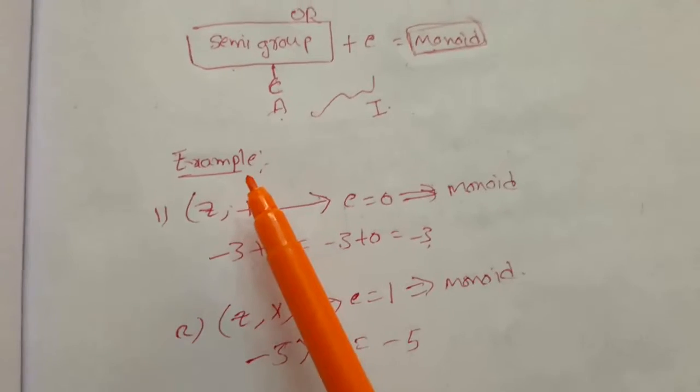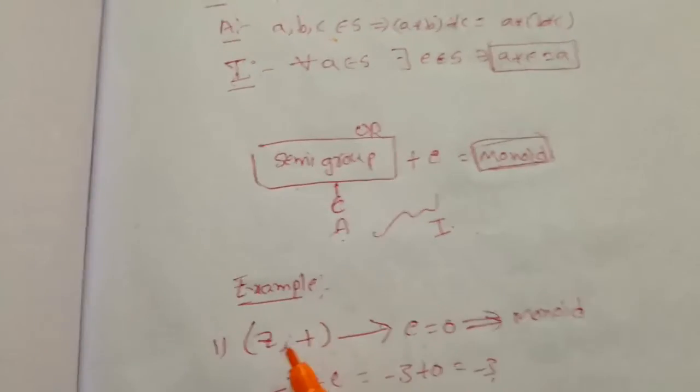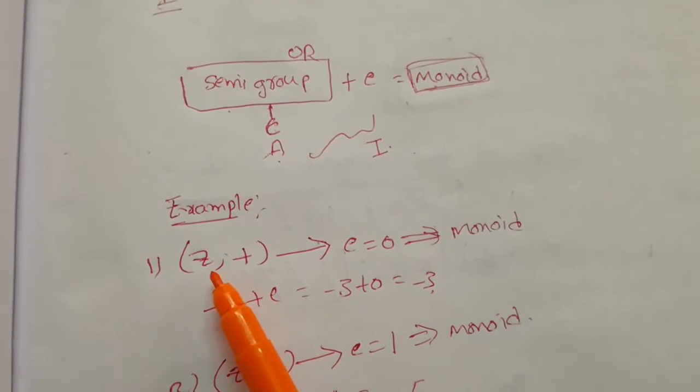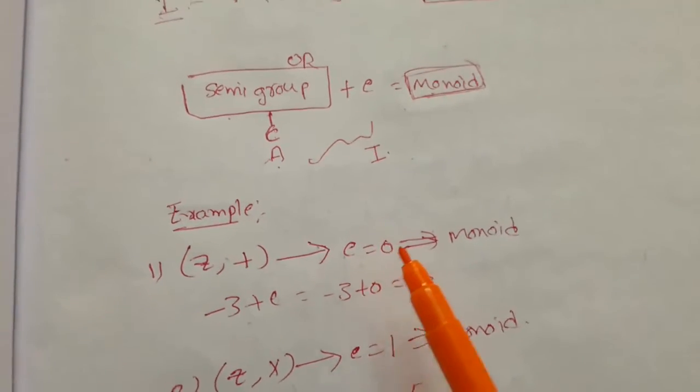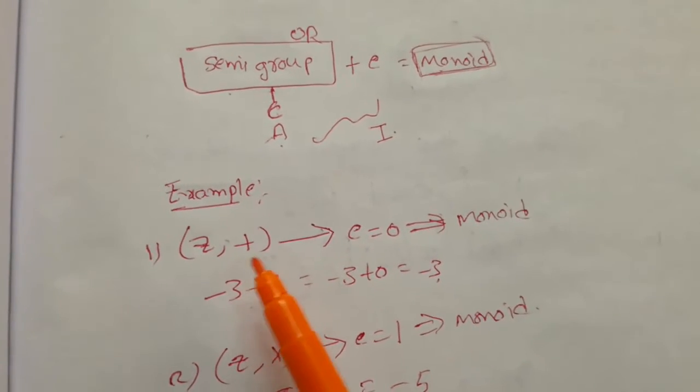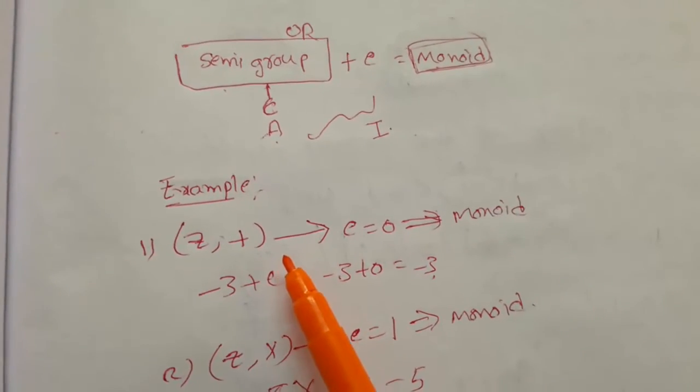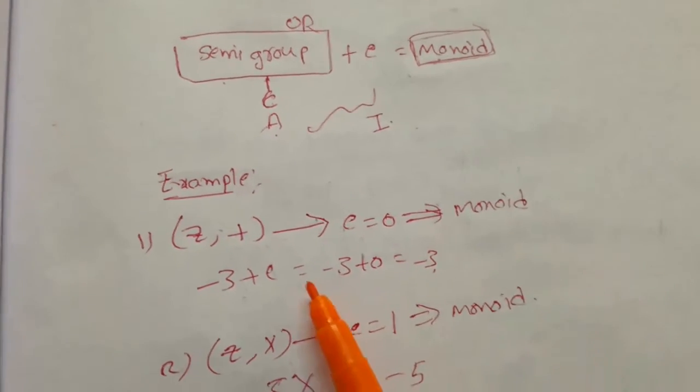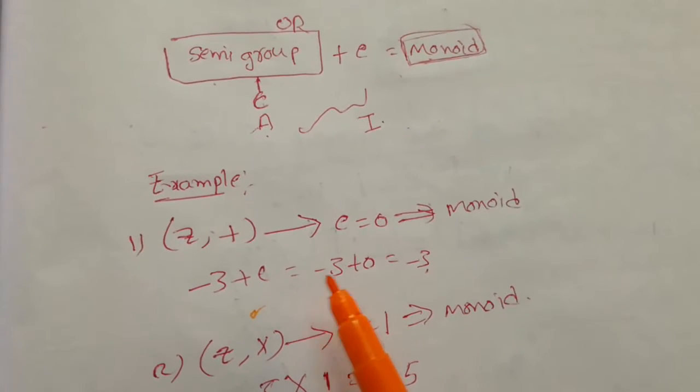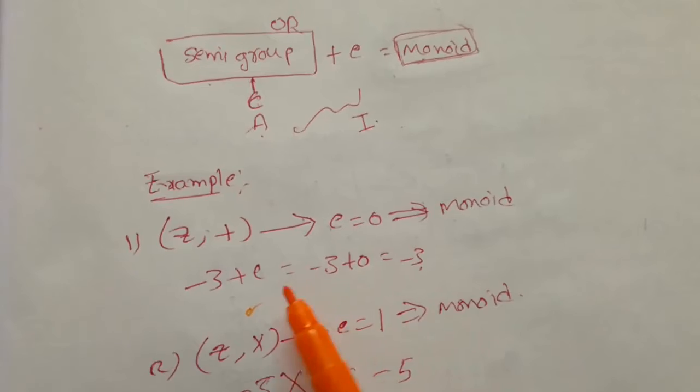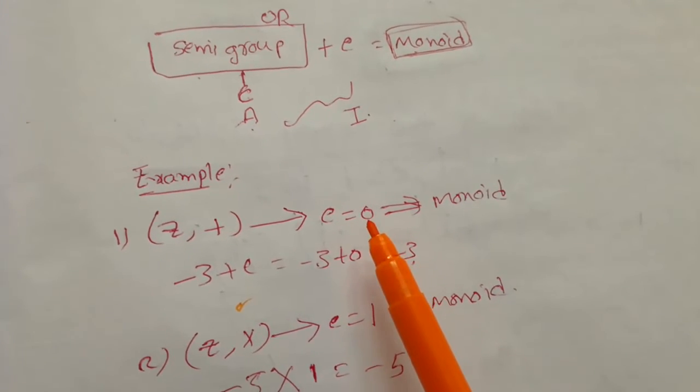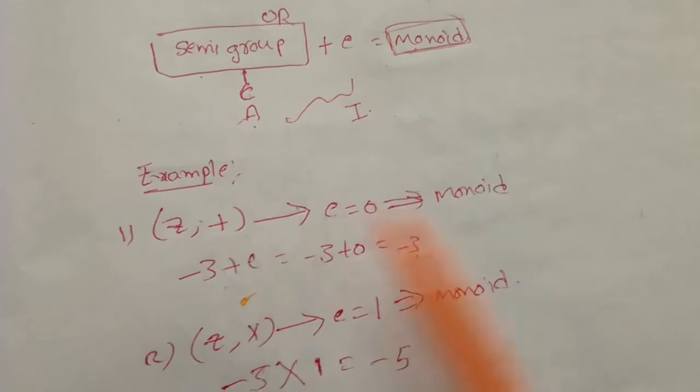For example, Z plus. We know that the identity element E is 0 in Z plus. So Z plus is a Monoid because minus 3 plus E equals minus 3. If you substitute E equals 0, you will get minus 3. So E equals 0 is the identity element. So Z plus is a Monoid.